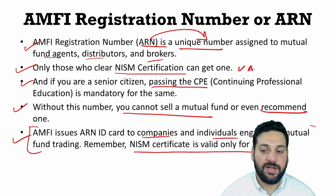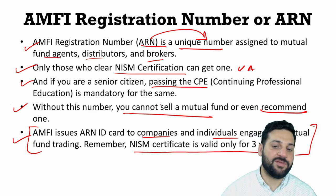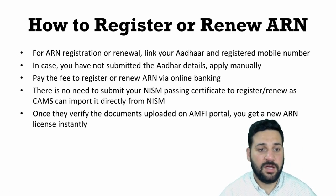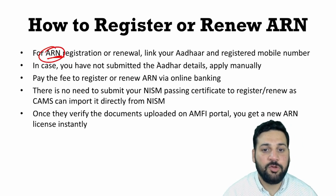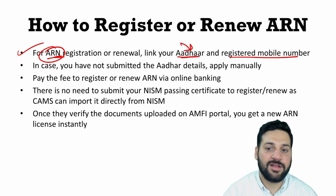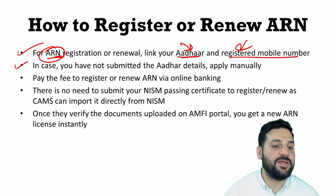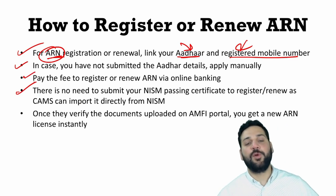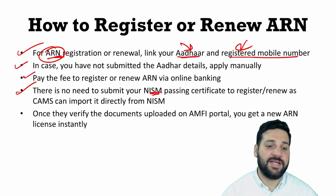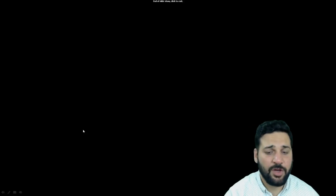The NISM certification is valid for three years only. After that, you either need to appear for the exam again or complete a CPE — a set number of required hours. For getting the ARN card, you need to link your Aadhaar card to your registered mobile number. If you have not submitted your Aadhaar, you need to apply manually and pay the fees. There is no need to upload your NISM certificate separately, as it will be verified directly by CAMS. Once documents are verified, you will get the ARN license instantly.